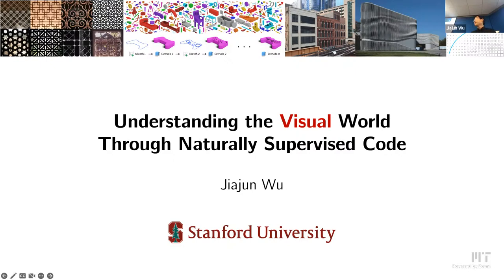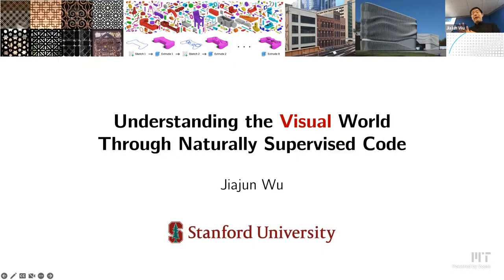I'm going to talk about — I started at Stanford a few years ago and have continued working on computer vision, machine learning, and AI in general, with some robotics. Today I'm going to talk mostly about computer vision, the perception stuff. It's embodied — maybe not that embodied — but hopefully embodied enough to be suitable for this seminar. So I'm going to talk about understanding the visual world through naturally supervised code. Visual world is straightforward. Code — what does that mean? There are structures, patterns in the textures and the geometry, especially in artifacts like objects and buildings. And what does it mean by naturally supervised? Hopefully by the end of the talk I can deliver on that.